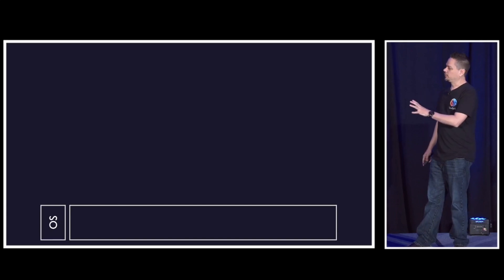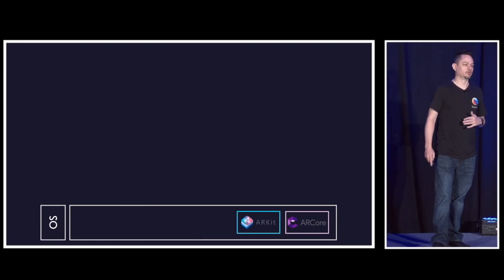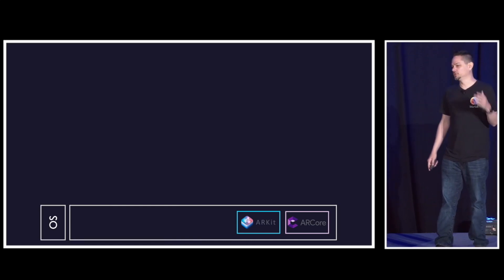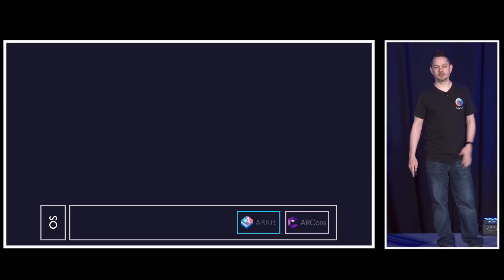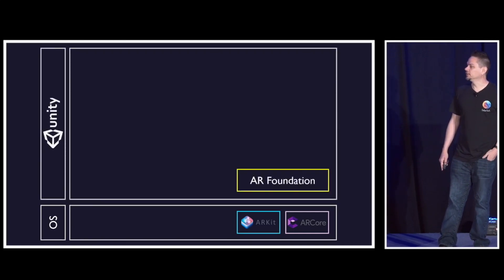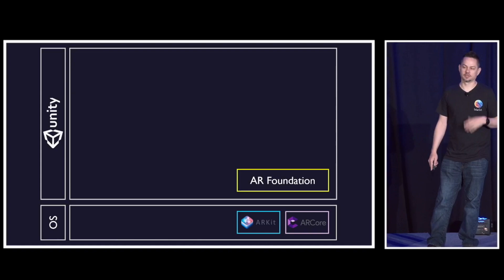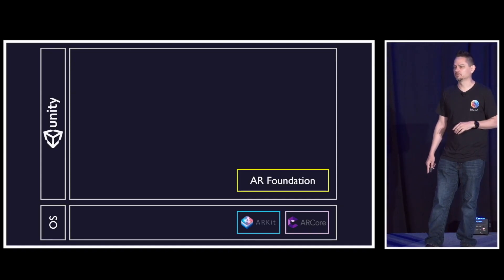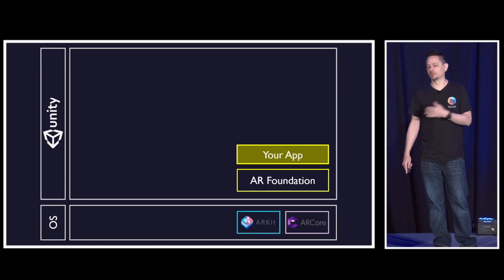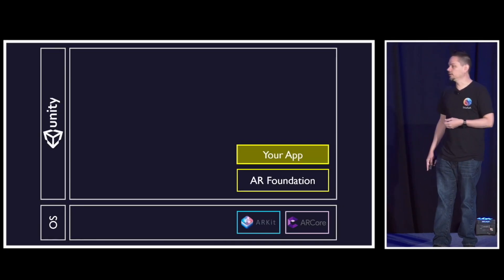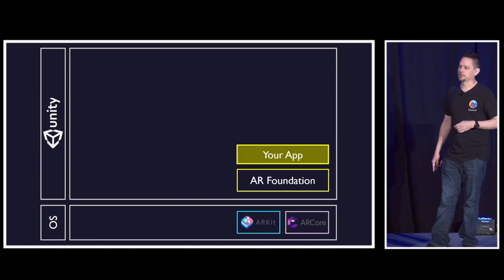Originally, we started with the operating system layer, and Apple made ARKit and Google made ARCore. They were two different platforms that did effectively the same thing in very different ways, so Unity came along and said they could make one layer that unifies these things. If you build a Unity app on AR Foundation, it runs on both platforms, and you can still do this today — you can still write an app that just targets AR Foundation.